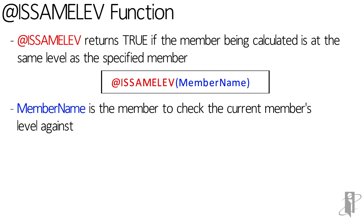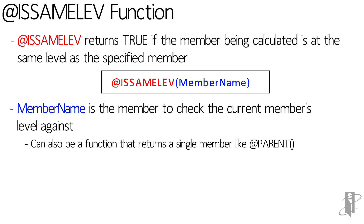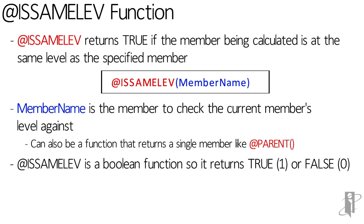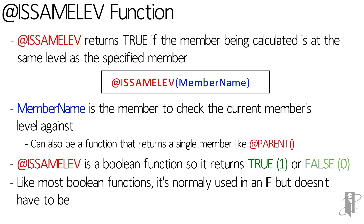While normally you specify a member name when checking for isSameLev, you can also use a function that returns a single member, like the parent function. Like most boolean functions, isSameLev returns true or 1, and if it's not true it returns false or 0, and it's normally used inside of an if.